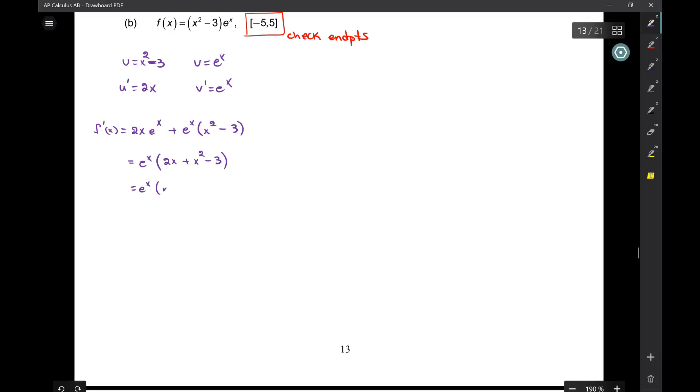x squared plus 2x minus 3. And now I can factor that to what? E to the x. So if f prime of x equals 0, then I have 0 equals e to the x times x plus 3 times x minus 1. So where is e to the x equal to 0? E to the x never equals 0, right? And then from here, I get that x equals negative 3 and 1.